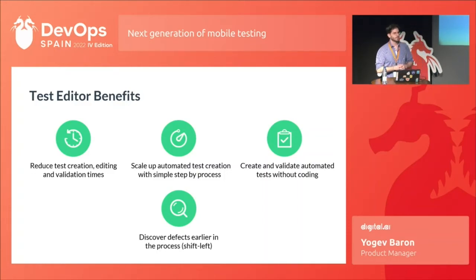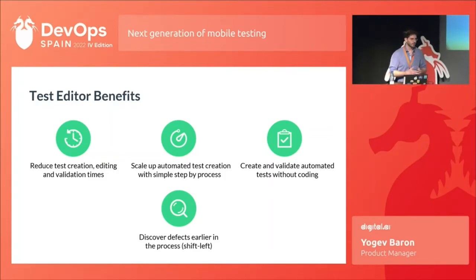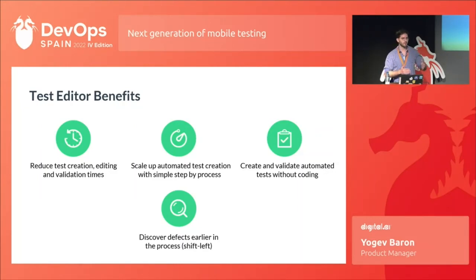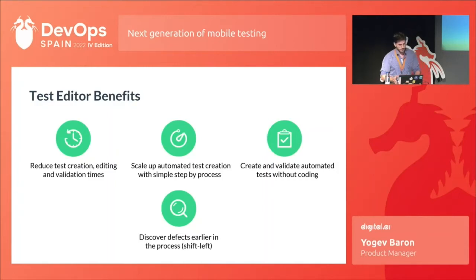We also have the option for developers. If developers just want to choose a chunk of code and validate it on a real device, they can build it in the test editor and do it. They don't need to run all their tests from beginning to end, which takes a lot of time. This really contributes to the DevOps process and shortens the time.